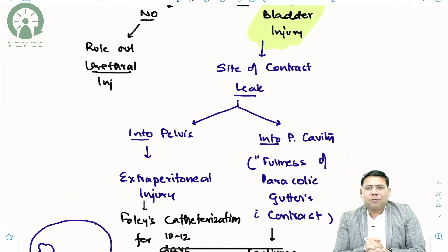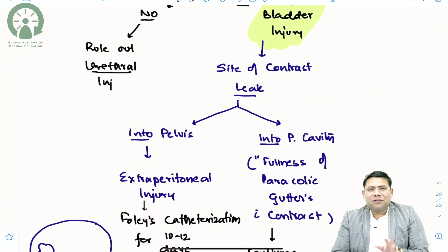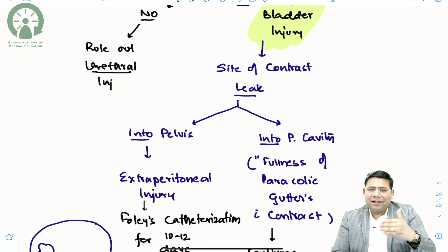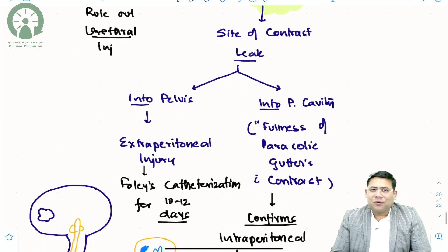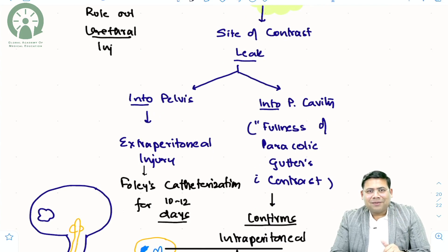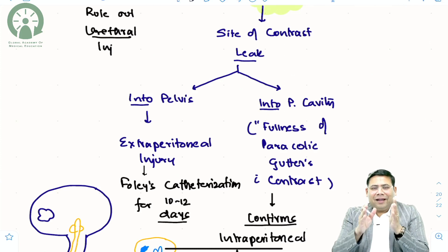So this covers the concept of bladder injury and management. Remember: intraperitoneal injury requires surgery; extraperitoneal injury is managed with Foley's catheterization. In part 2 of this video, which I will release in 2 days, I will discuss urethral injury. Do comment below on how you liked the video, share it with your friends, subscribe to my channel, and let students learn with fun. Bye-bye.